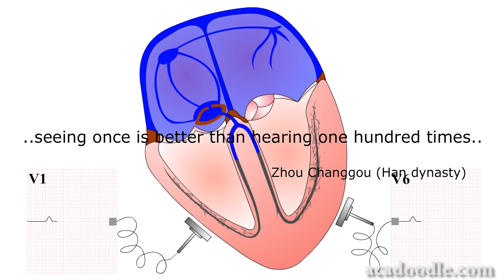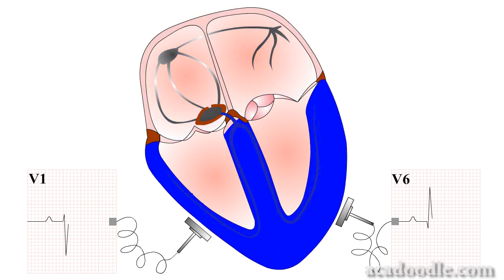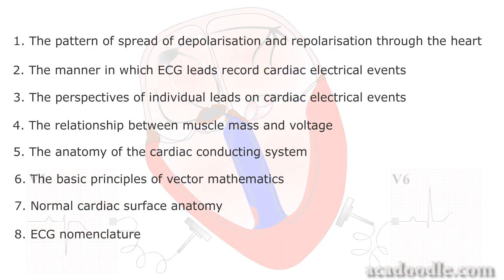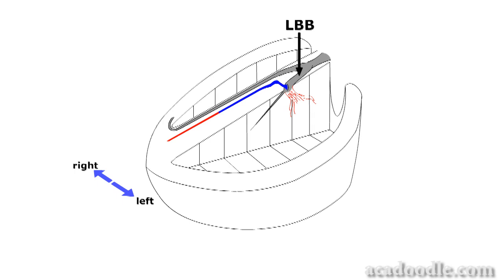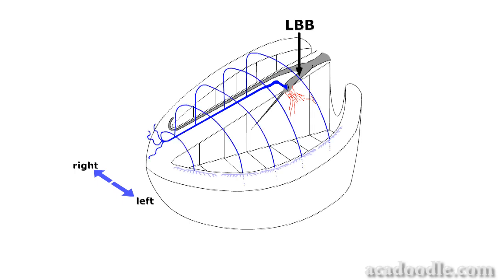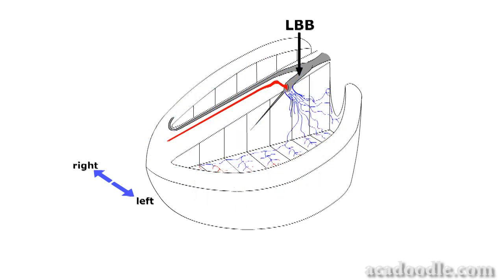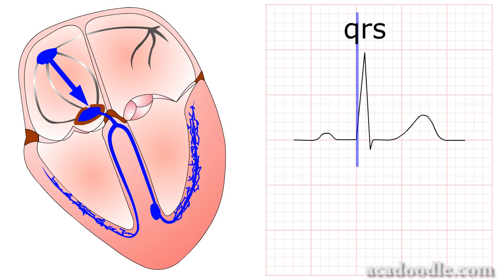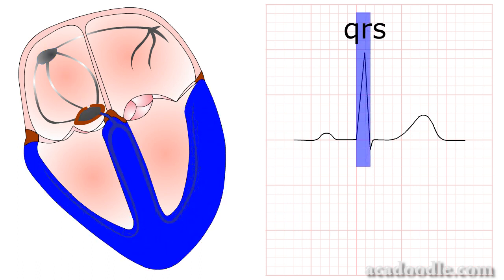In Section 1 of this course, we explain the generation of the normal 12-lead ECG. In our opinion, there are 8 key areas of knowledge with which you need to be familiar in order to understand the normal ECG readout. We will take you through each of these areas in a logical sequence in the first 7 videos of this section, and then use the knowledge gained to construct a predicted normal ECG. We strongly recommend that you study the videos in the sequence presented. In this section, we also explain how to use the ECG to time the major events of the cardiac cycle, and how to calculate the heart rate from an ECG readout.